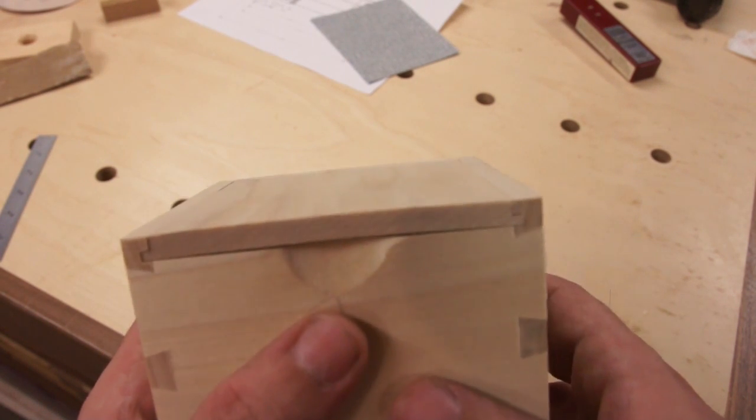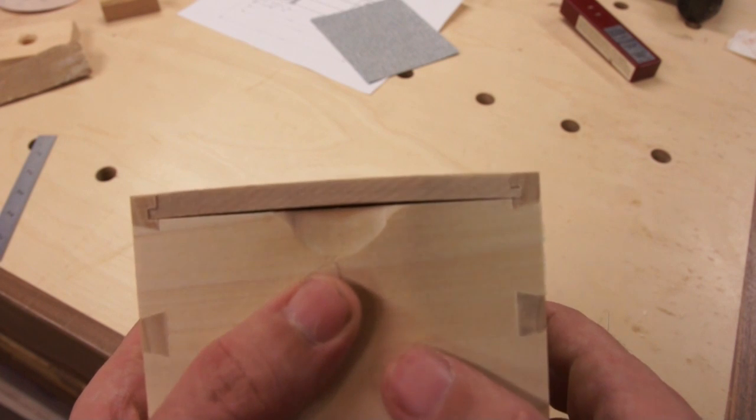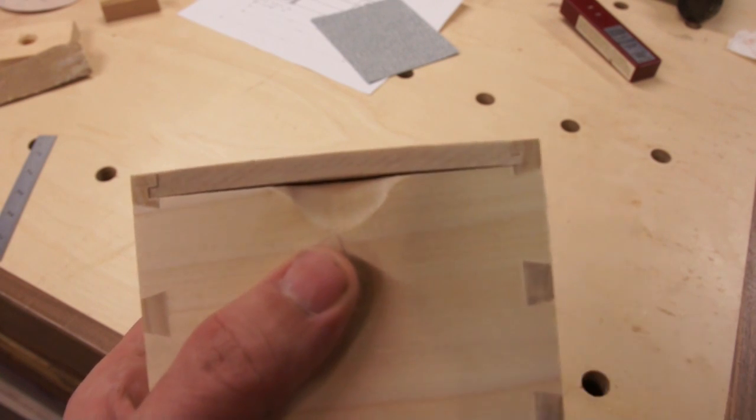We usually think about wood movement on big things. But even these little boxes that are only 4 inches wide, if you go across the grain, it's a problem.